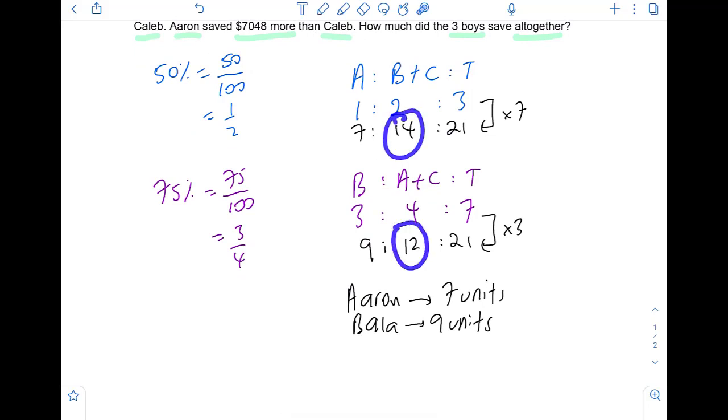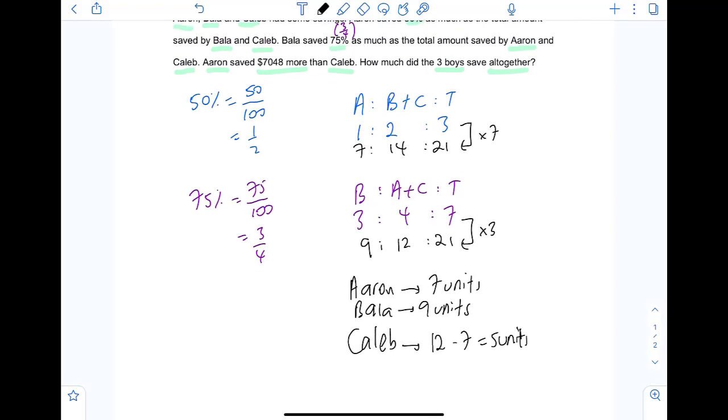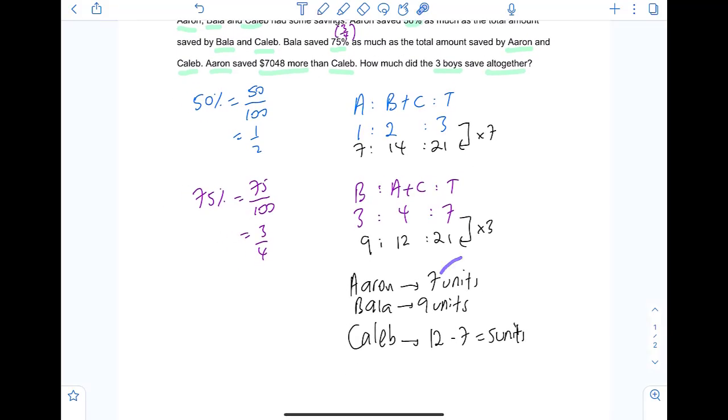Let's say you want to use this 12. Aaron and Caleb is 12. We know Aaron is 7. We can find Caleb's. 12 minus 7. 5 units. For sure, we know Aaron has 7. Bala has 9. Caleb has 5 units, respectively.